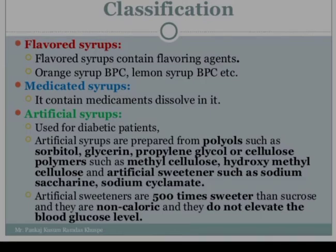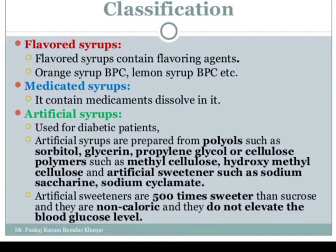Flavored syrup: as the name indicates, it contains a flavoring agent. Examples include orange syrup BPC, lemon syrup BPC, etc. These syrups are used primarily to impart different flavors to pharmaceutical preparations.